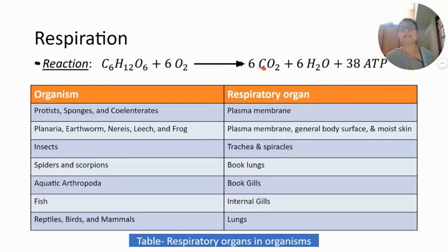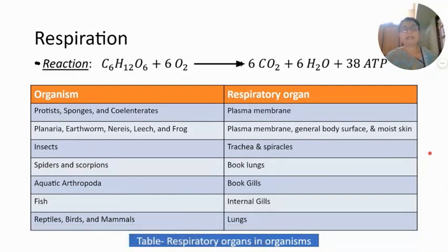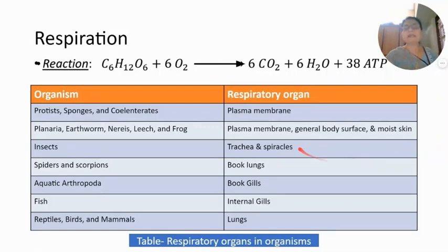For respiration, exchange of gases between the organism and the environment is required. The respiratory organs in different living organisms are different. For example, the respiratory organs in plants are different from those in animals.